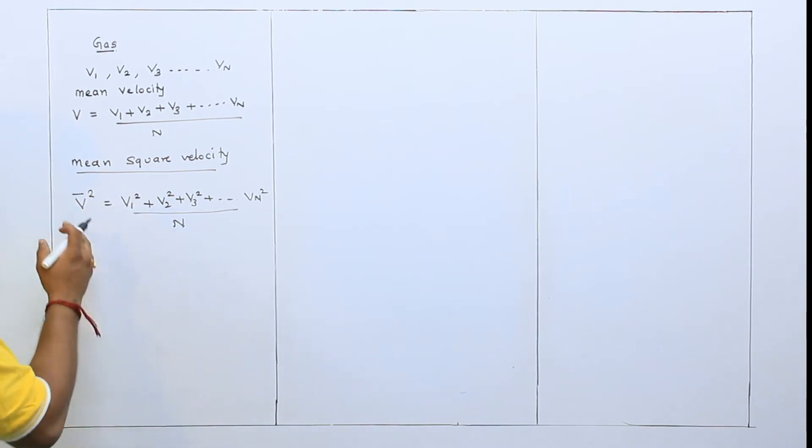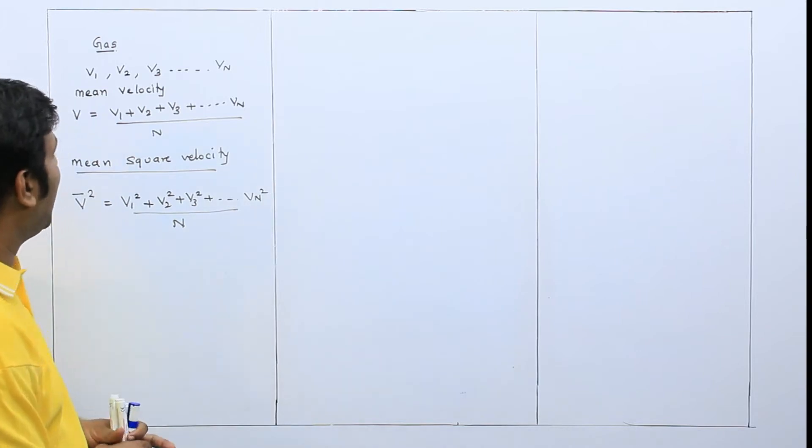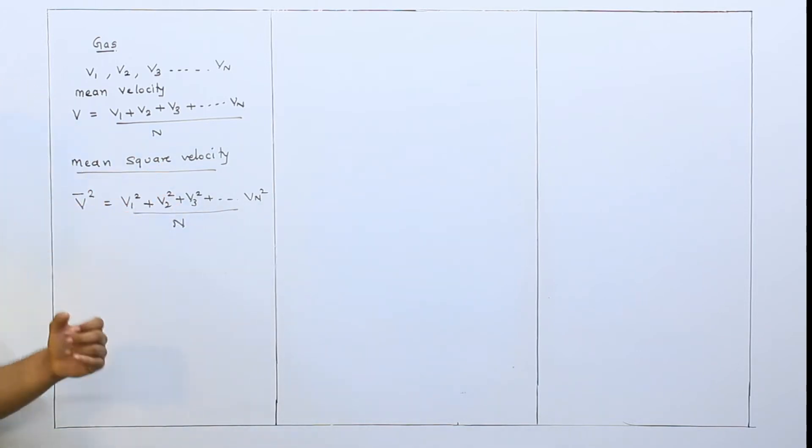So if we should scan a mean square velocity, this answer will be mean square velocity. It is simple, we have just divided by the average. But if I have taken root for this, if I took root, then what will we get?